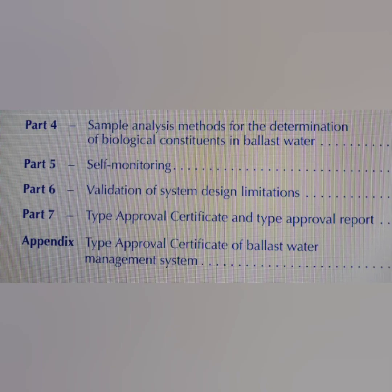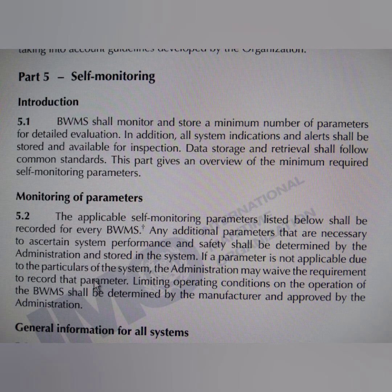Part 4 of the annex is about sample analysis method for determining biological constituents in ballast water. Part 5 is self-monitoring. The requirement is that the ballast water management system shall monitor and store a number of parameters for detailed evaluation. In addition, all system indicators and alerts shall be stored and available for inspection. This is similar to your ODME system — every kind of action that you perform on it must be recorded, whether you use it or test it.